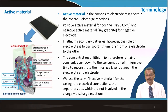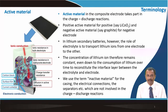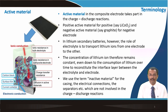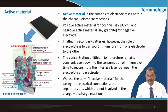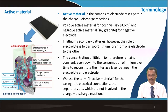The active material undergoes the redox reaction and takes part in the charge-discharge reaction. For example, lithium cobalt oxide is the positive active material and graphite is the negative active material — these are the materials where the actual redox reaction takes place. In a lithium-ion battery, the role of the electrolyte is just to transport lithium ions from one electrode to the other. The concentration of lithium ions therefore remains constant, even accounting for lithium consumed to reconstitute the interface layer between the electrolyte and electrode.